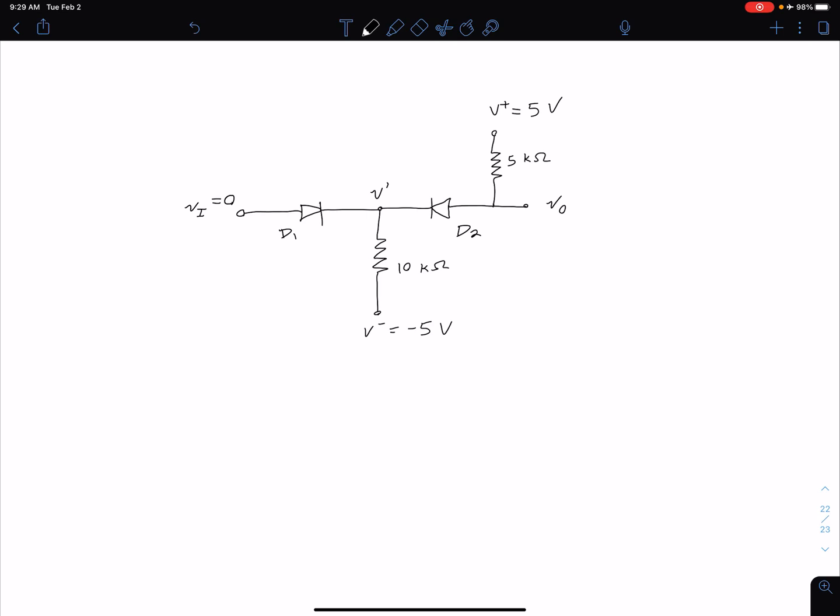In this case if we follow this path here what we can see is let's say that our D2 is on because roughly we have this plus 5 volts on our P side and a negative 5 volts on our N side. So assuming we don't have any voltage drop across that 5k ohm or 10k ohm resistor, that should be enough to turn the diode on.